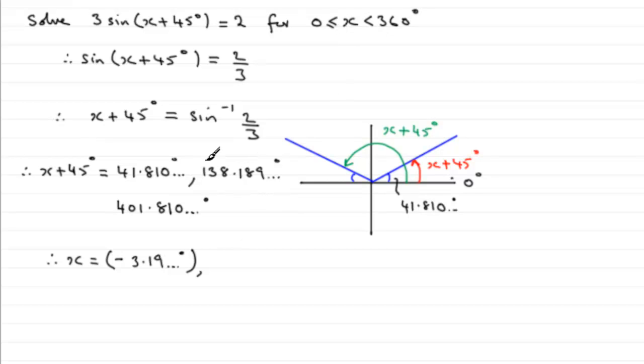Take 45 degrees away from the 138 degree angle and you end up with 93.189 and so on degrees. That's in range. And if we take 45 degrees from the 401 degree angle you end up with 356.810 and so on degrees.